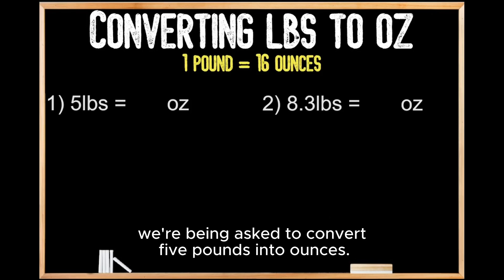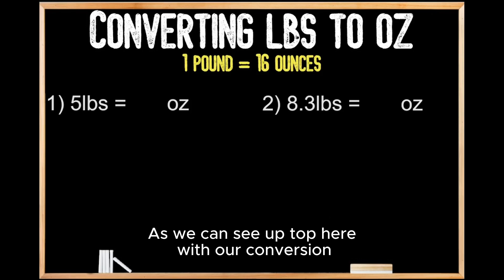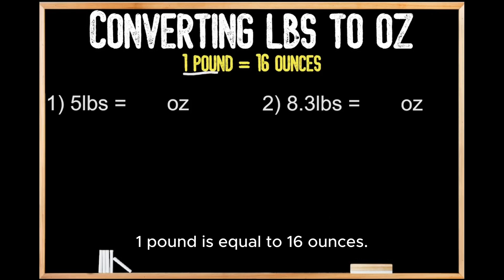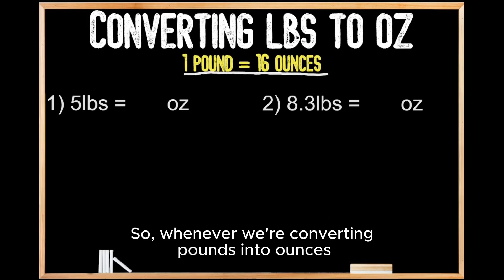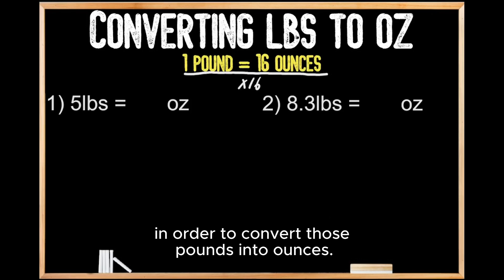For question number one, we're being asked to convert five pounds into ounces. As we can see up top here with our conversion, one pound is equal to 16 ounces. So whenever we're converting pounds into ounces, we're going to multiply the value of our pounds by 16 in order to convert those pounds into ounces.